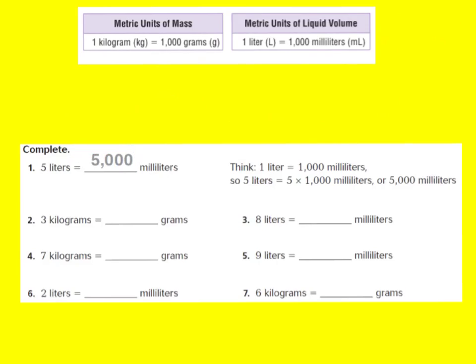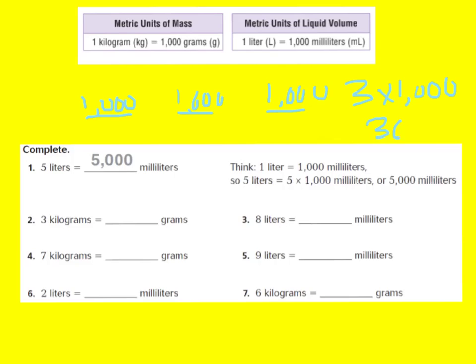Let's look at number two. Number two is saying 3 kilograms equals how many grams? If I look at my chart, I know that 1 kilogram equals 1,000 grams. So I have 3 kilograms, and I'm going to draw my 3 kilograms. Each one is worth 1,000 grams: 1,000, 2,000, and 3,000 grams. That's also like saying 3 times 1,000, and 3 times 1,000 is 3,000. So 3 kilograms equals 3,000 grams.